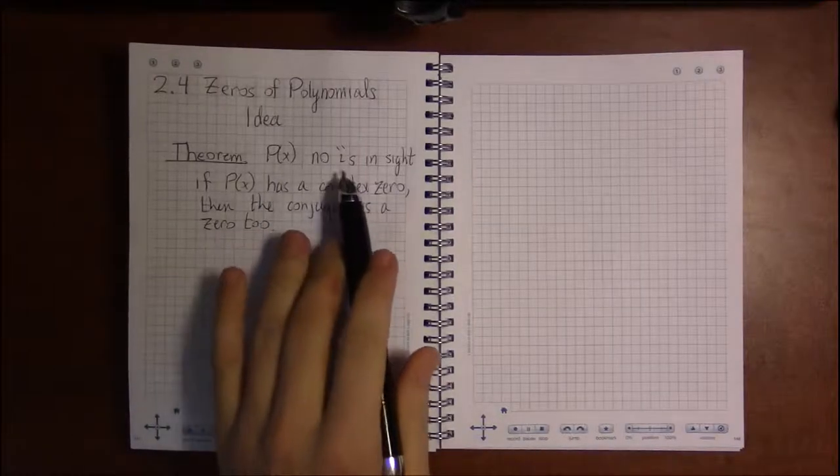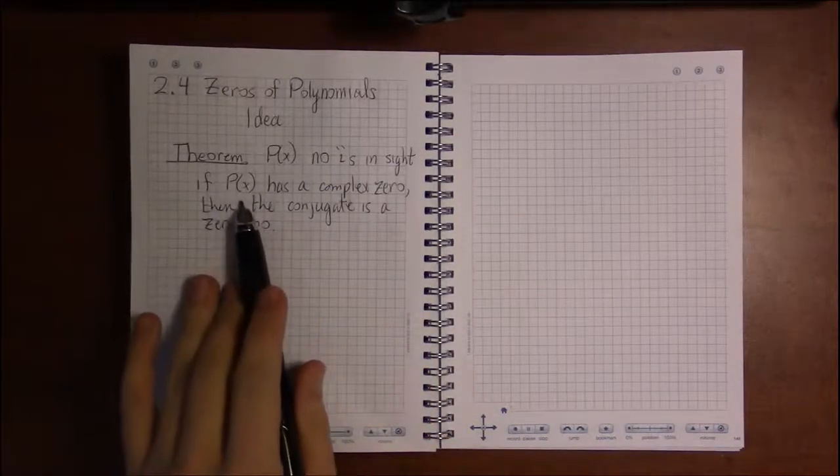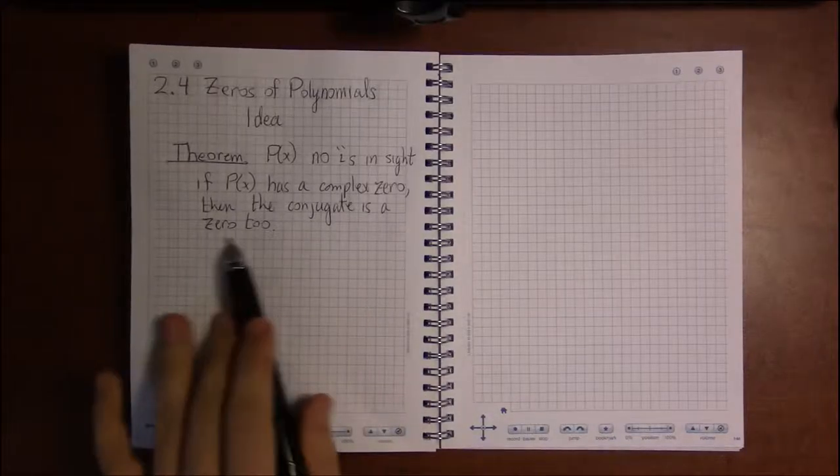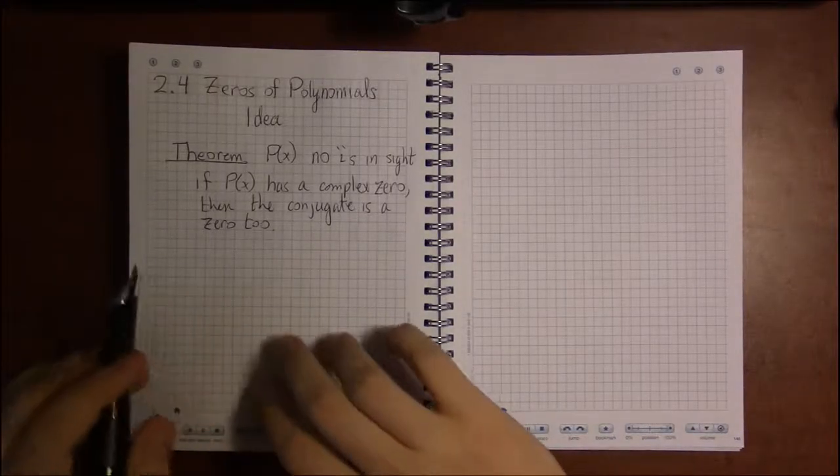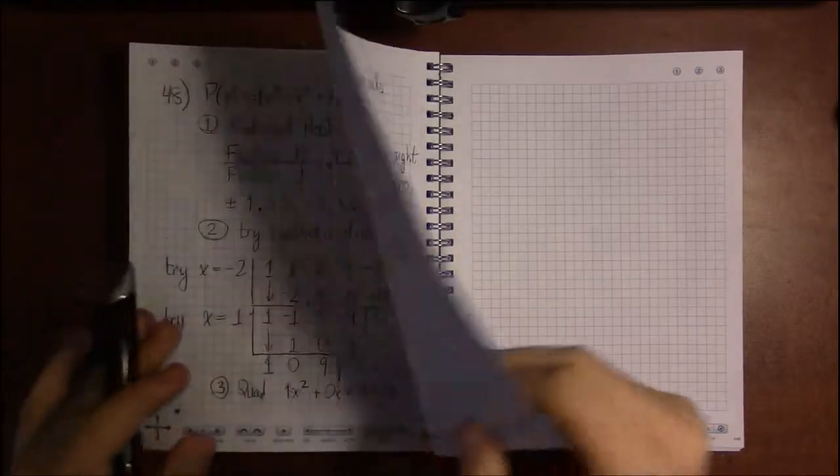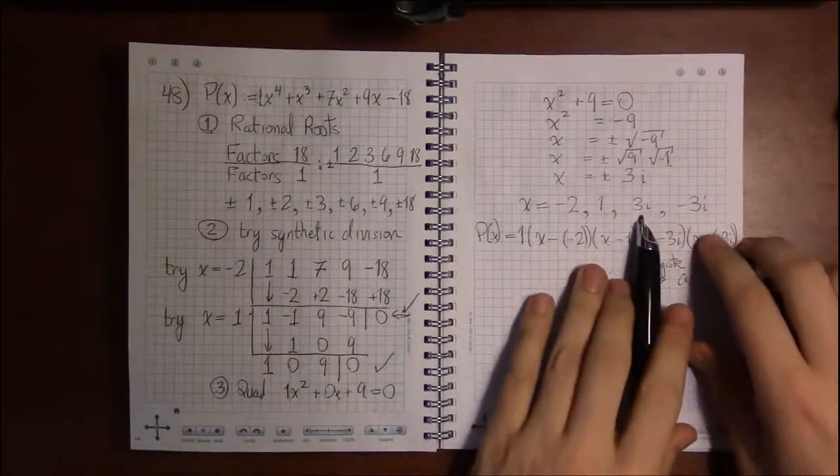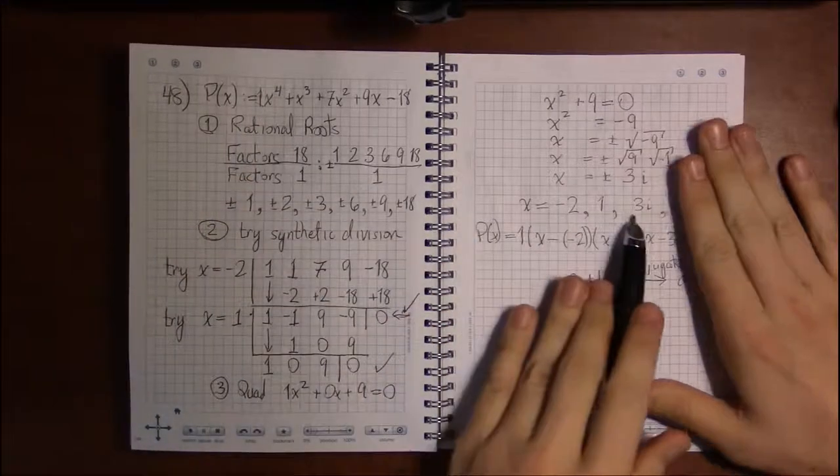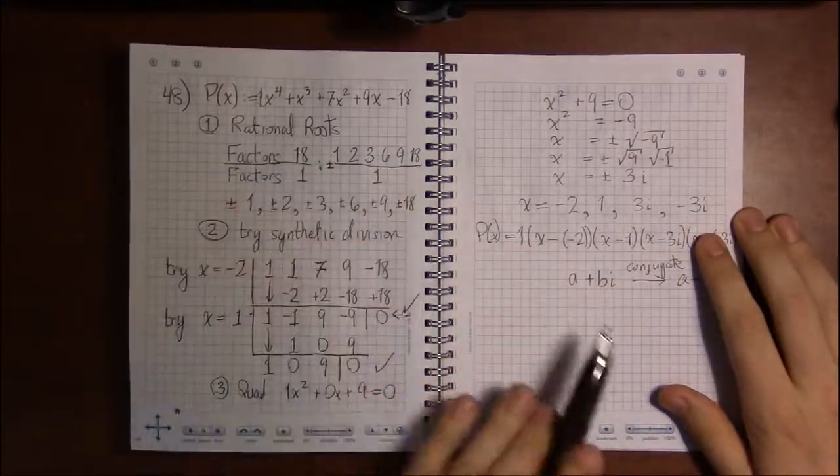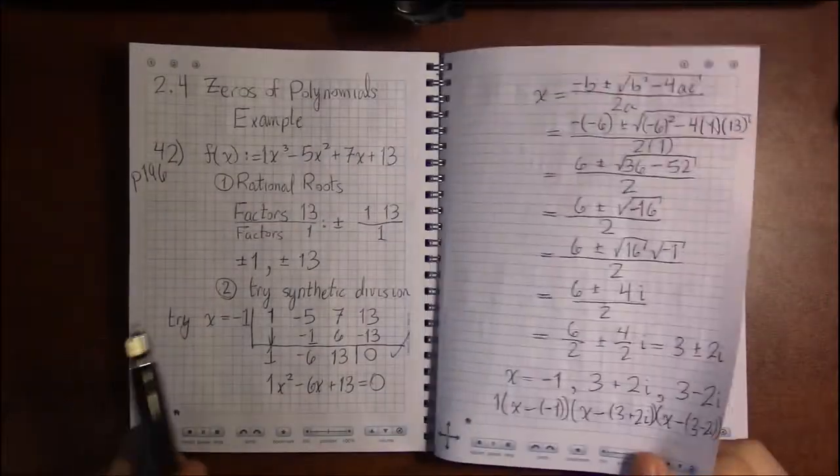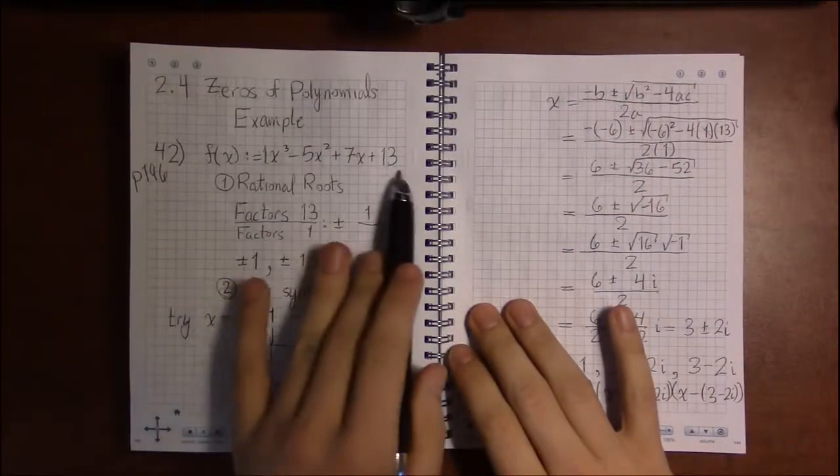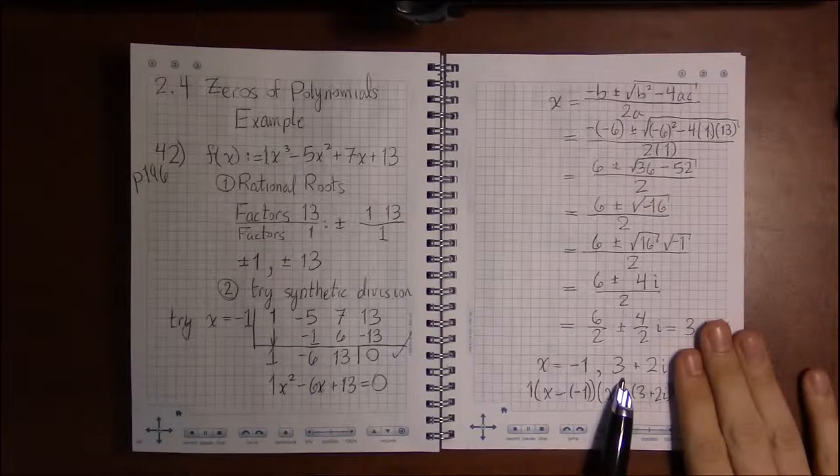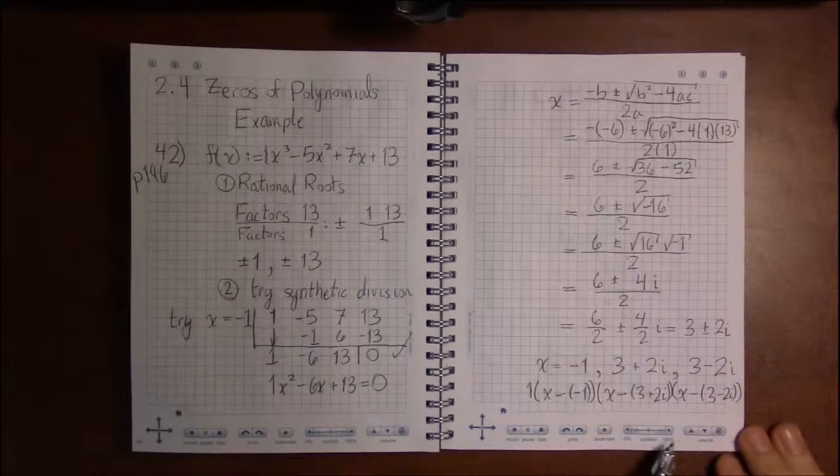If we have a nice polynomial with no i's in sight and we have a complex zero, it turns out that whatever that complex number was, its conjugate must be a zero as well. That's simply stating what we were seeing before: if we know 3i is a zero and there's no i's in sight here, then -3i must be a zero as well. Same thing with the previous example—there are no i's in sight in this polynomial, and we had 3+2i as a zero, so it must be the case that 3-2i is a zero.